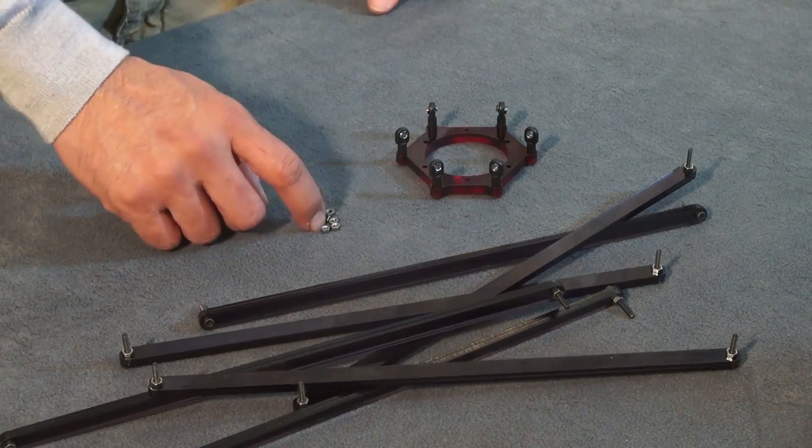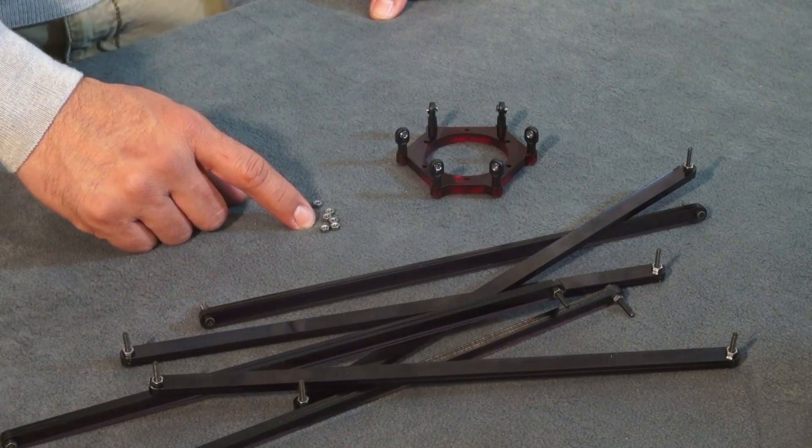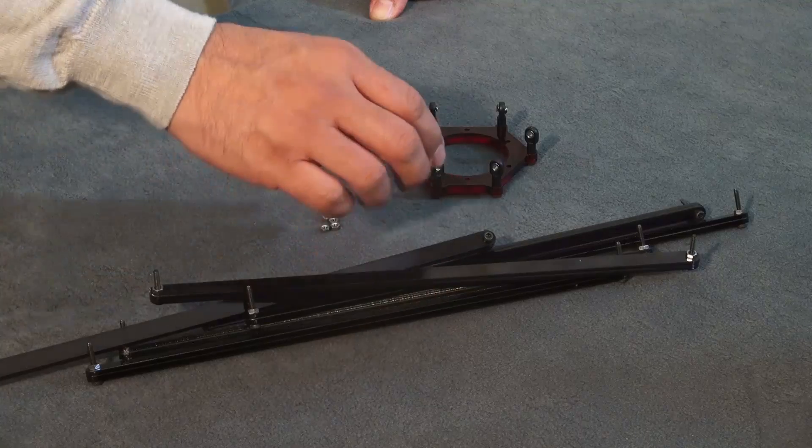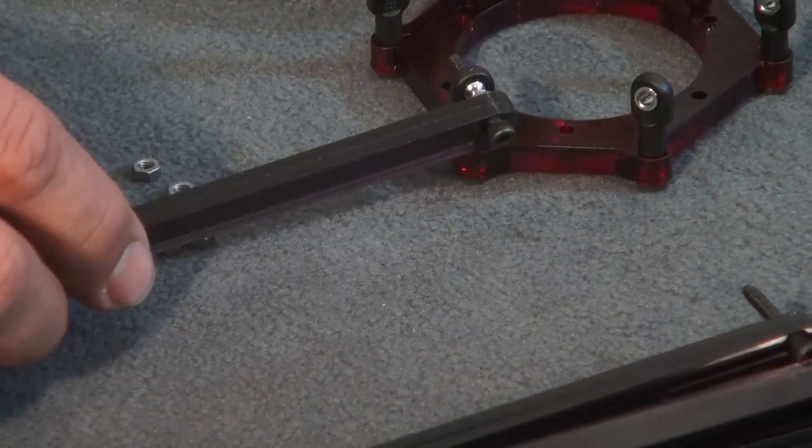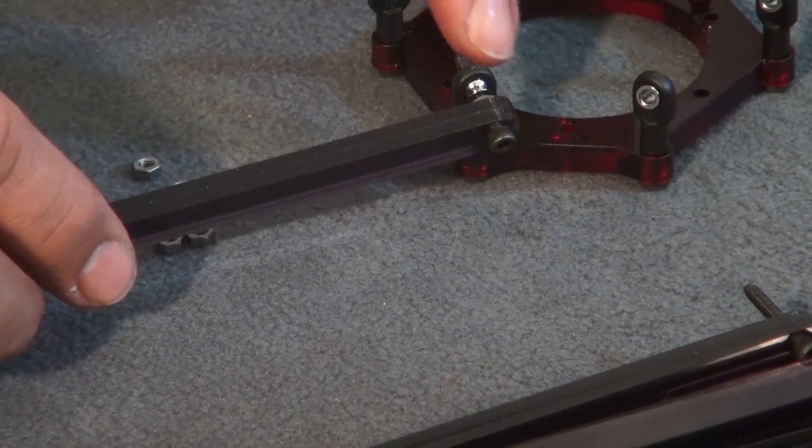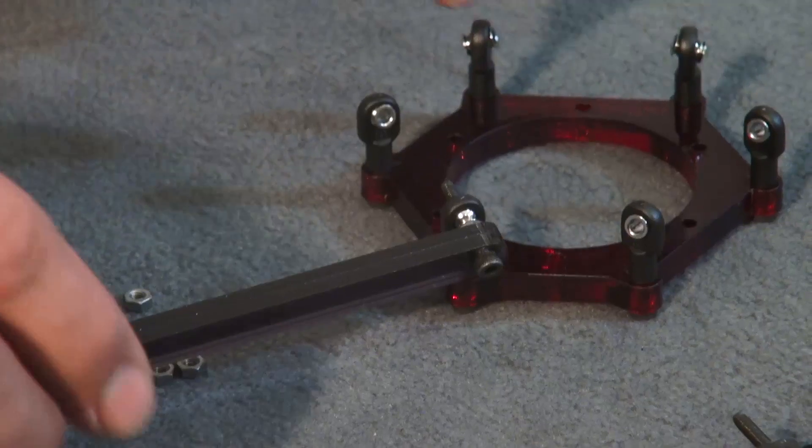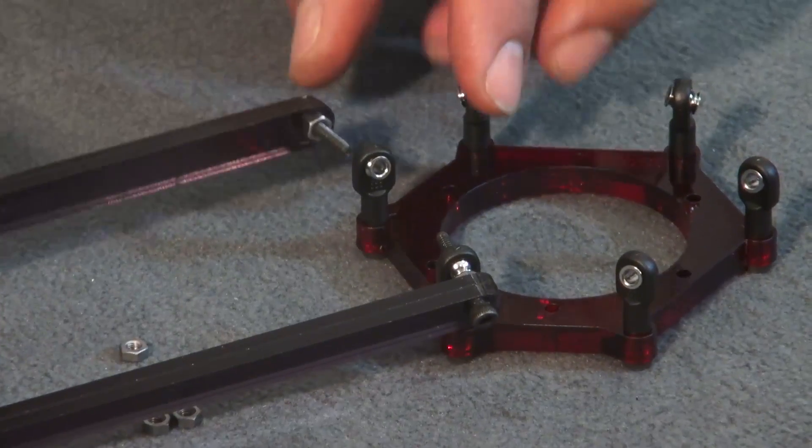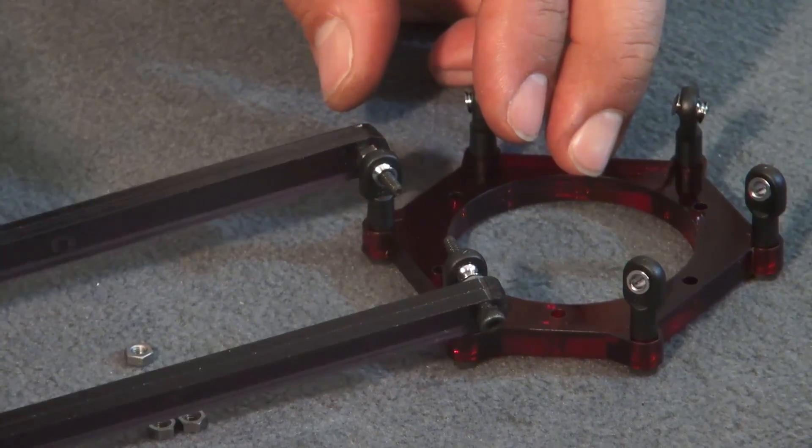For this portion of our video, we're going to need six M3 nuts, our assembled arms, and our centerpiece. We need to attach the arms to the centerpiece with the bolt facing in to the center as much as possible.